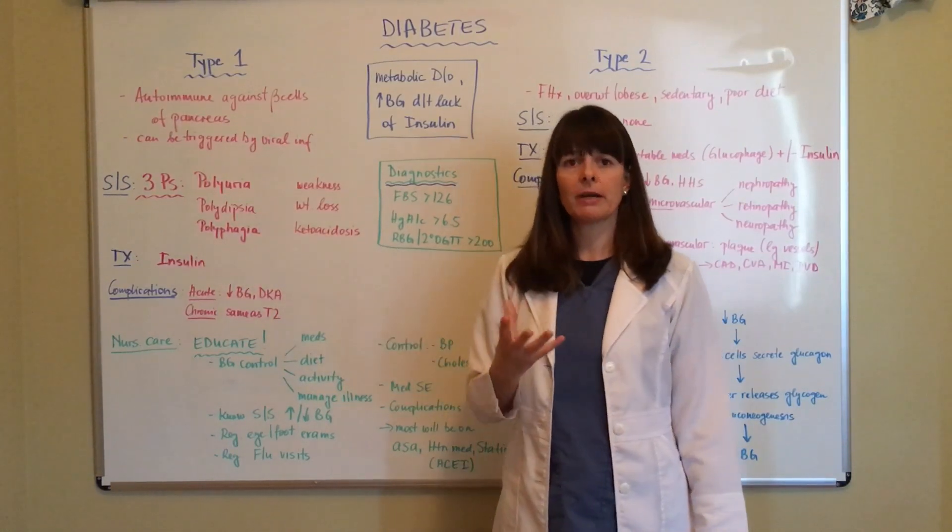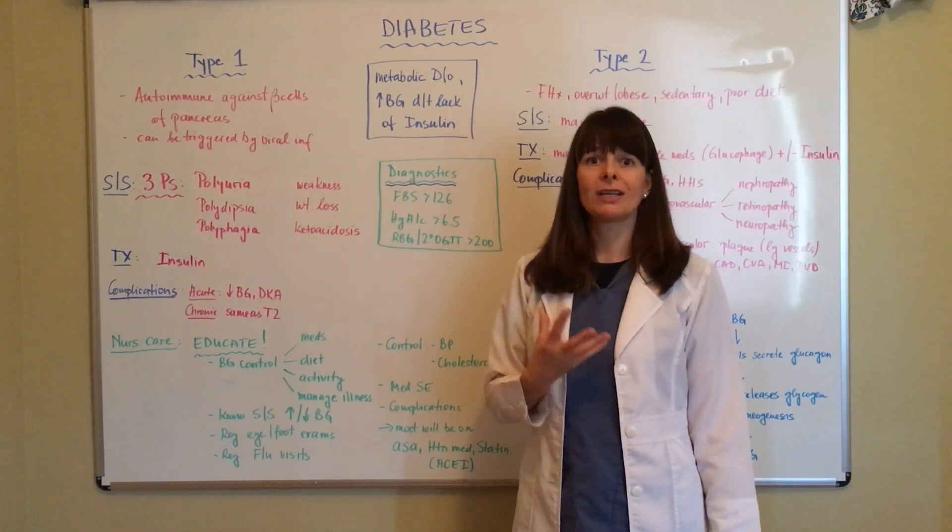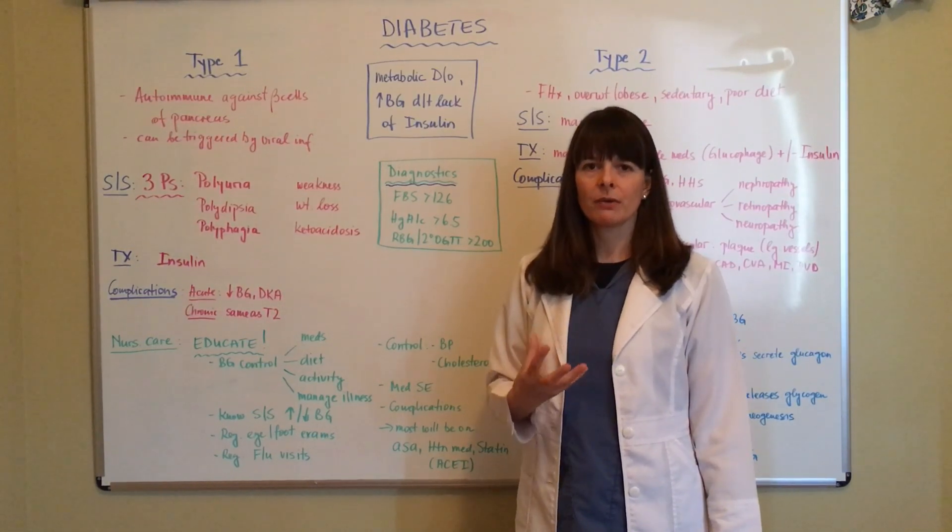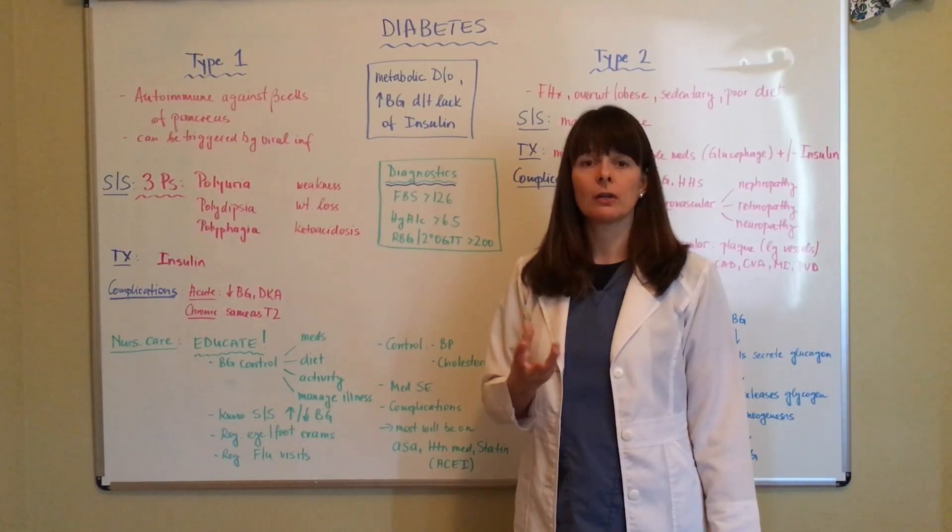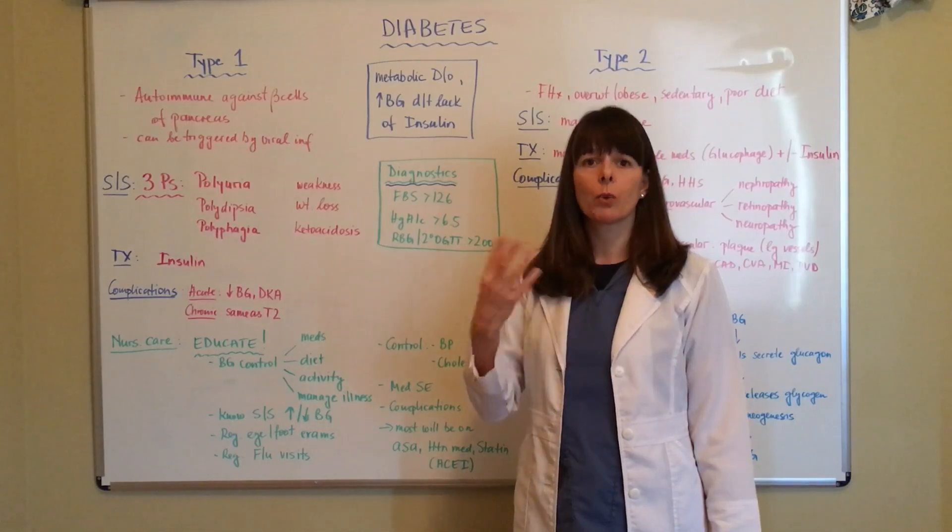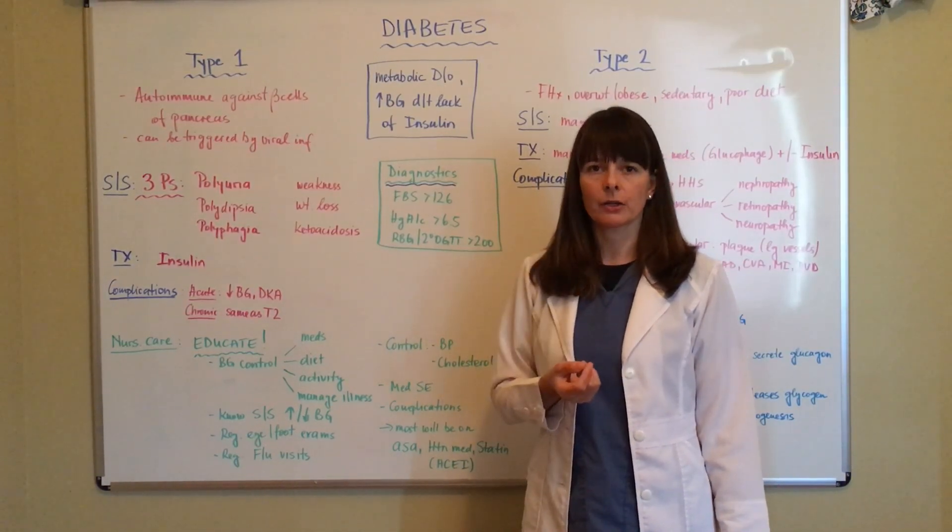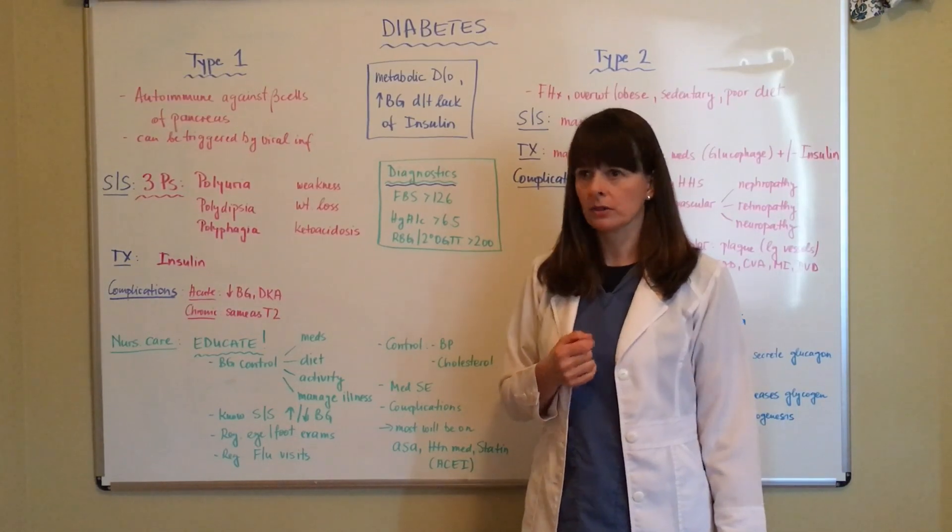Polydipsia, because think about the blood of the patient becoming really thick, saturated with glucose. It's going to be very thick and the patient is going to feel thirsty, wanting to thin out that blood by increasing their thirst and water consumption.